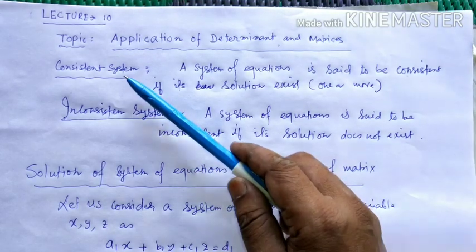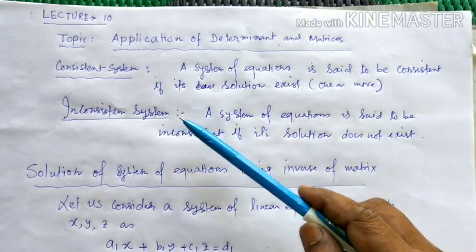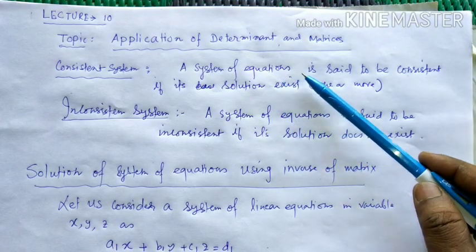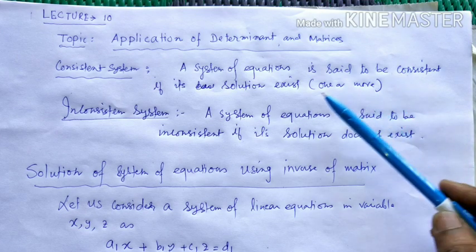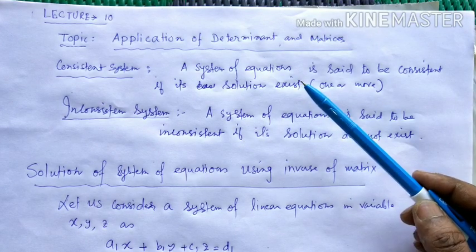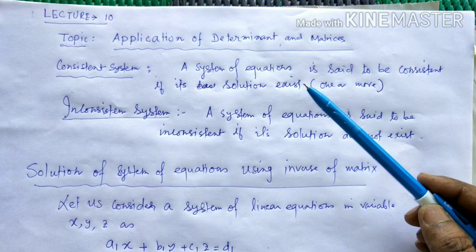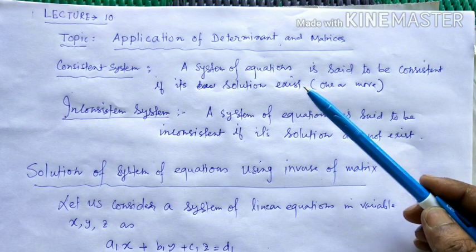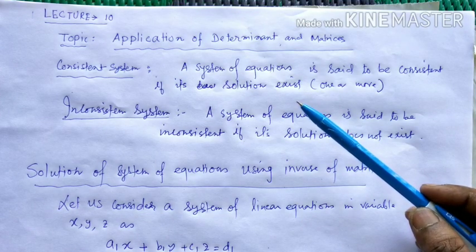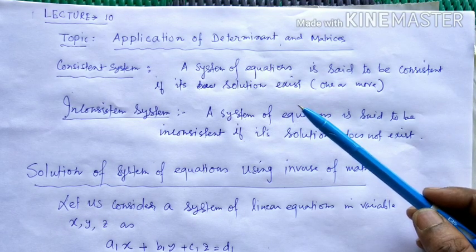Before starting, let us know about two particular systems. One is called a consistent system and the other is called an inconsistent system. This is regarding the system of linear equations. A system of equations is said to be consistent if its solution exists. For example, with two or three simultaneous linear equations, if after solving you get x = 5, y = 7, and z = 9, then the system has a unique solution.